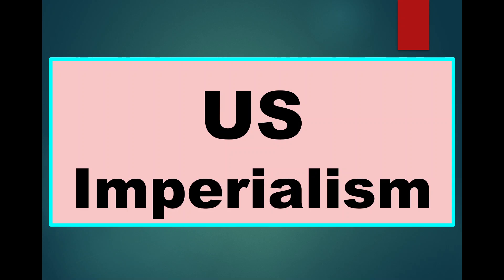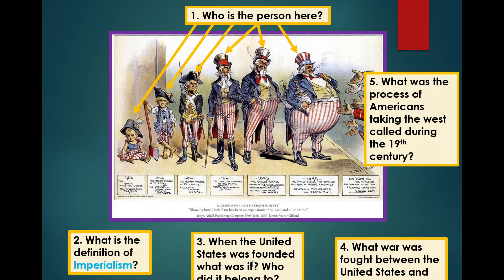Today we are going to be talking about American imperialism during the beginning of the 20th century. What we're talking about here is the definitions of imperialism, and we're seeing the development of the United States as an imperialist country. It starts out as a baby after the Constitution is signed in 1783.